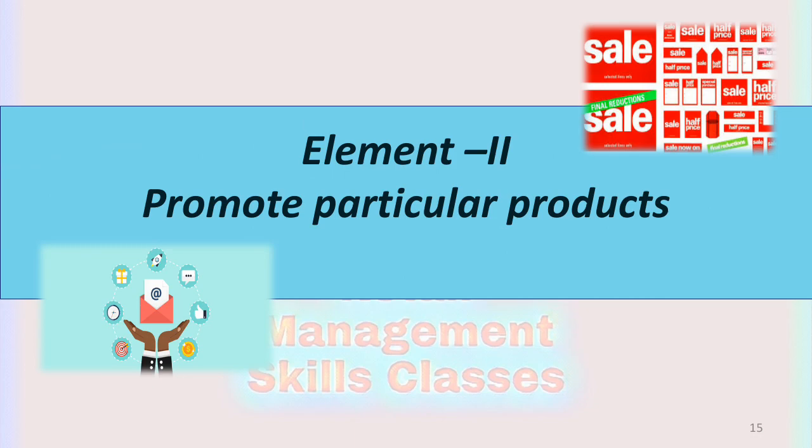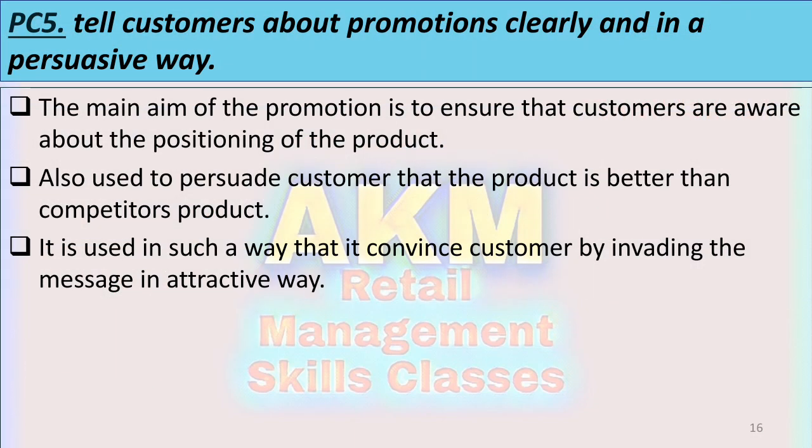Element Two — Promote particular products. PC5: Tell customers about promotions clearly and in a persuasive way. The main aim of promotion is to ensure customers are aware of the existence and positioning of the product. Promotion is also used to persuade customers that the product is better than competing products. Promotion has many potential uses: it can increase sales, attract new customers, encourage loyalty, create awareness, inform and remind customers, reassure new customers, change attitudes, position a product, and support a distribution channel.